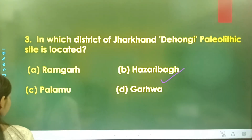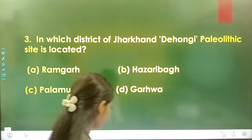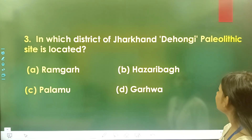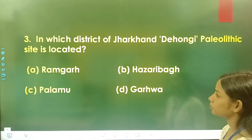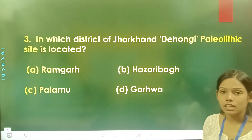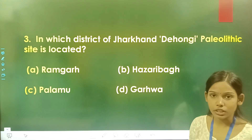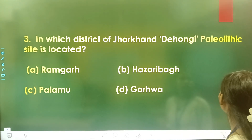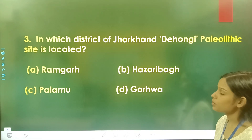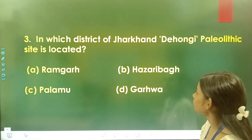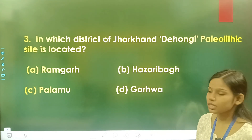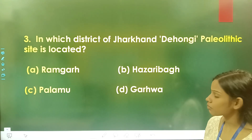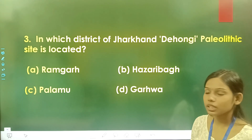Question number 3: In which district of Jharkhand is the Dehongi Paleolithic site located? Option A is Ramgarh, option B is Hazaribag, option C is Palamu, and option D is Garhwa. The correct answer is option B, Hazaribag.